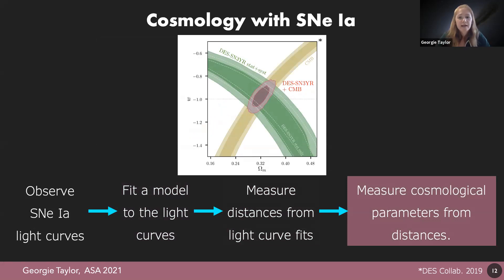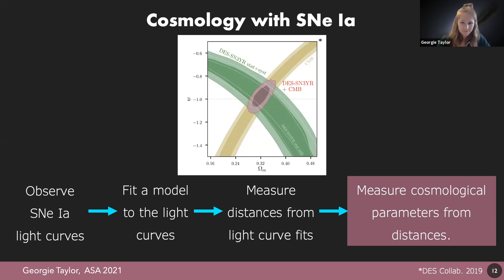Supernova parameters recovered from the SALT2 fit are used to measure redshift-independent distances via the modified Tripp equation. Those distances are compared to redshifts from spectra to produce a Hubble diagram. Finally, from the Hubble diagram we can measure cosmological parameters such as the matter density Omega_matter or the dark energy equation of state parameter w. This figure from the Dark Energy Survey's three-year supernova analysis in 2019 constrains w to about five percent; the aim now is a one percent precision measurement of w.